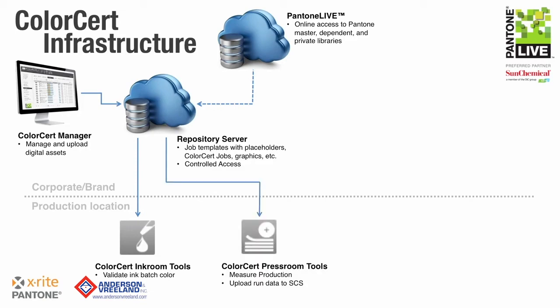When it is time to go to press, we use ColorCert Pressroom tools to open the ColorCert jobs that correspond to our production. This ColorCert job contains all of the standards, tolerances, metadata such as item information, and may even contain an image of the item being produced. Providing the press operator with everything they need to successfully monitor the quality of their production in a single package saves the time it takes to search a database looking for the colors being run on an order. It also eliminates the possibility that the press operator could accidentally select the wrong color standard or the wrong tolerance.